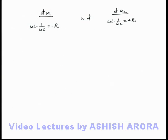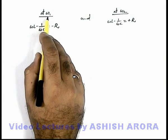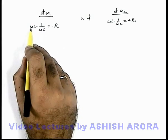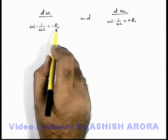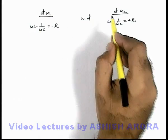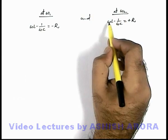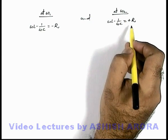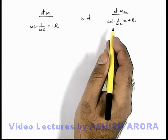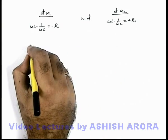In continuation, let's discuss which we have studied right now that at angular frequency omega 1, the reactance omega L minus 1 by omega C can be taken as minus R, and at frequency omega 2, omega L minus 1 by omega C must be equal to plus R. These are the quadratic equations which I am leaving for you as an exercise to calculate the value of omega 1.